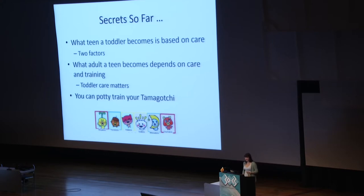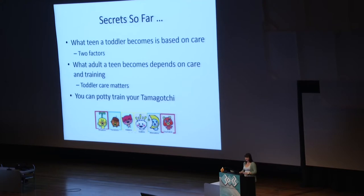What adult a teen becomes depends on the same factors, plus a third factor: how well disciplined your Tamagotchi is. Toddler care also matters for what adult your teen becomes — if you take great care of your toddler, you don't have to take such good care of your teen for it to become a great adult. But if you've neglected your toddler, you've got a lot of catching up to do.